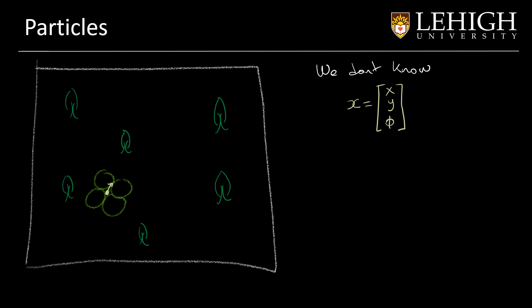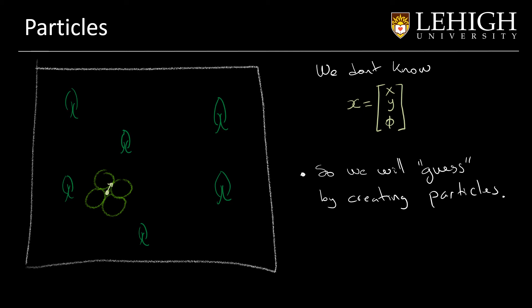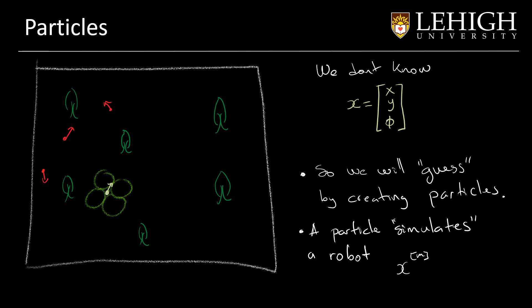Now, in order to solve this problem, we are going to use particles. We will guess by creating particles all around the environment where we think the robot can be — we will place many many particles. A particle is simply a simulation of the robot, like the belief of a robot, and we will denote it by X with the index M. We can place many particles in the environment just where we think the robot is, because we don't know where the robot is.